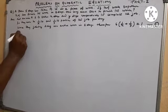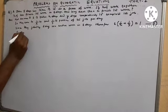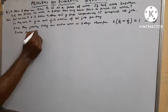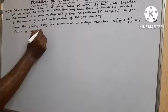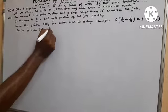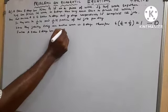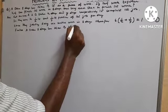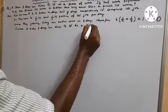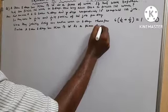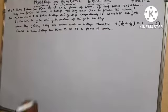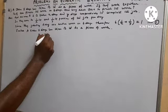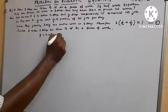Further, A takes 5 days less than B to do the piece of work. Therefore y equals x plus 5. That is the second equation.